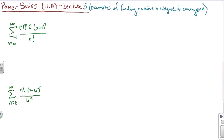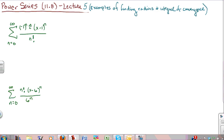Last lecture we had just come up with a theorem that says given a power series, one of three things can be the domain of convergence. One possibility is it converges for all possible x. Another possibility is that it converges only for the x it expands around. And the other possibility is it has a non-zero finite radius of convergence — it converges on some interval centered around the thing you're expanding around, and it may or may not converge at the endpoints.